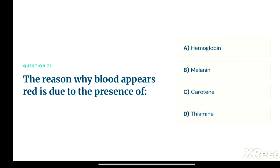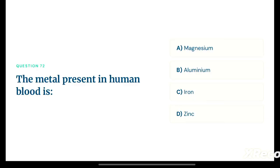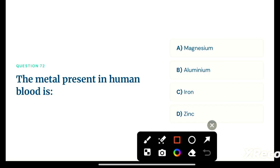Next question: the metal present in human blood is — option A: magnesium, option B: aluminum, option C: iron, option D: zinc. The correct answer is option C, iron. Iron is present in human blood and is part of hemoglobin.